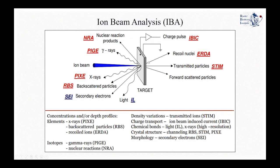With all these techniques we can get different information. With PIXE, RBS, ERDA, PIGE, and NRA, we can get elemental concentration information and also determine the depth profile of elements within the target. For PIGE and NRA, because they monitor reactions with specific isotopes, we are sensitive to isotopic information. With STIM, as I will explain later, one observes variations in density of the material.